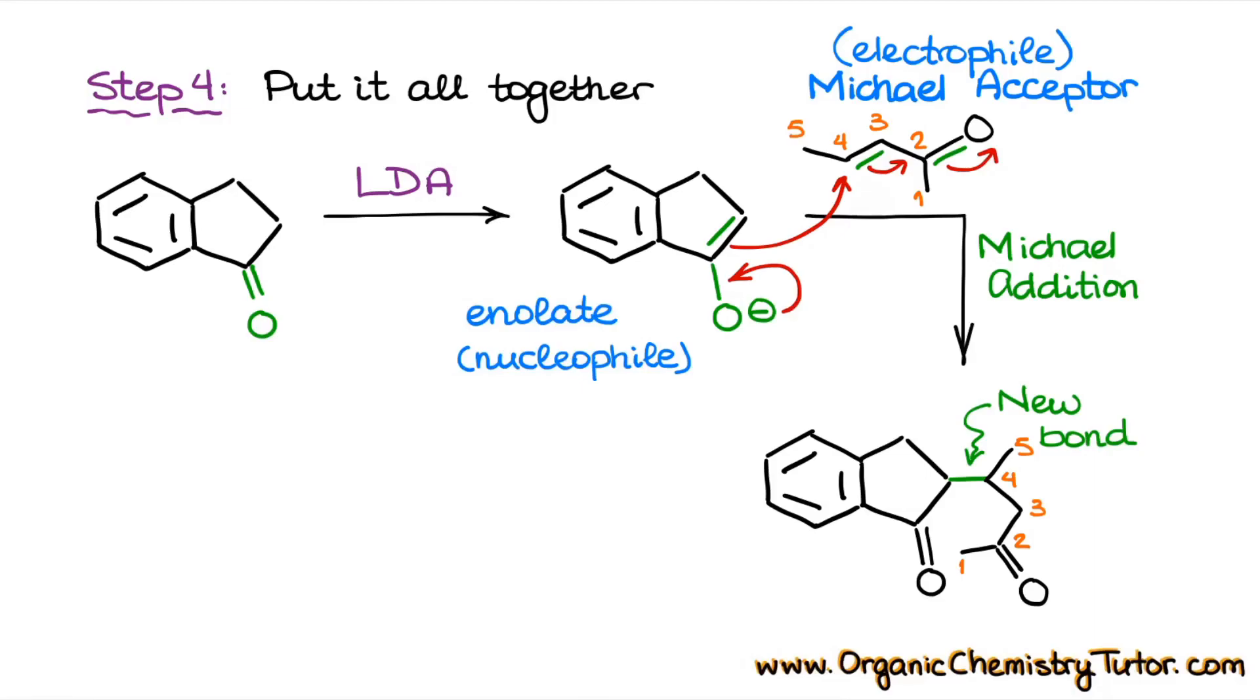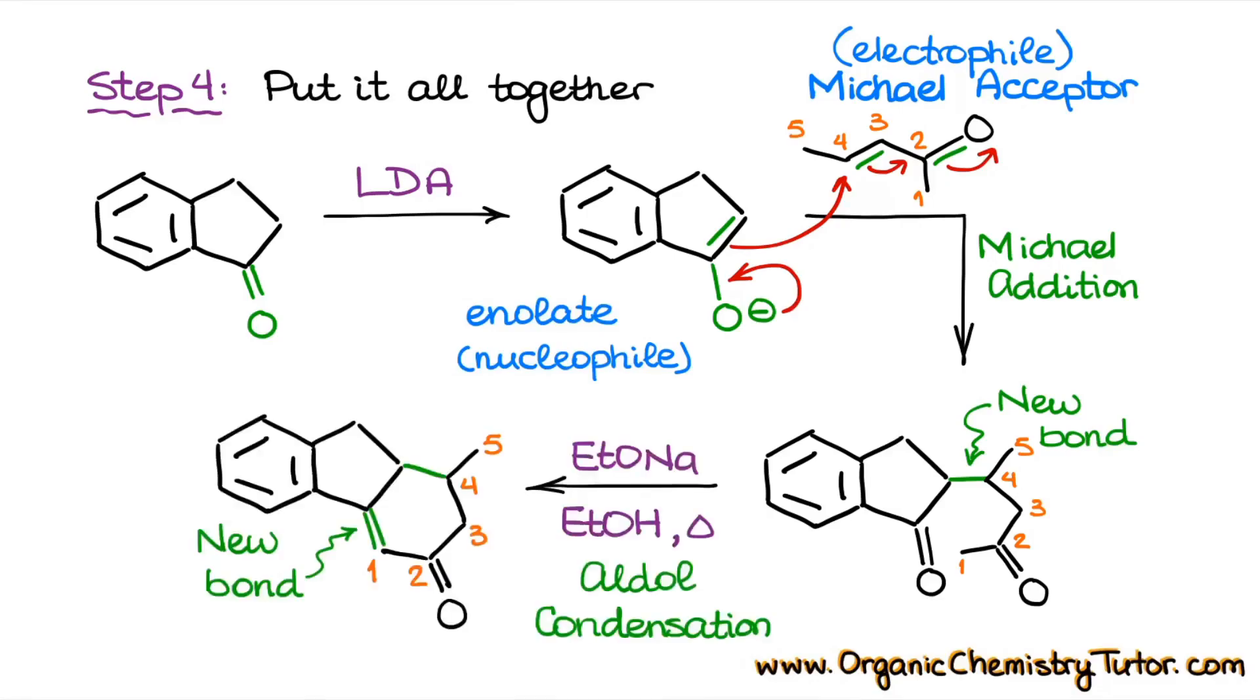So now once we have this precursor to the final cyclization, we need to assemble our final carbon skeleton and we could do that by using the basic conditions one more time to do the intramolecular aldol condensation, which would give us the skeleton for the molecule.